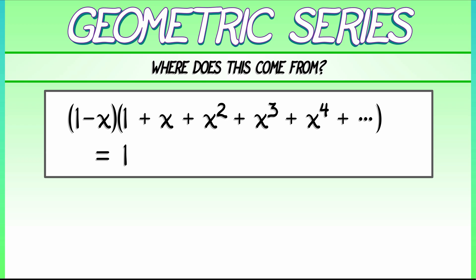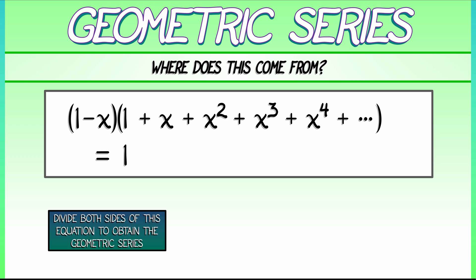What does that mean? What do we do next? Oh, right. We just divide both sides by quantity 1 minus x. And that's it. We have derived the geometric series from scratch.